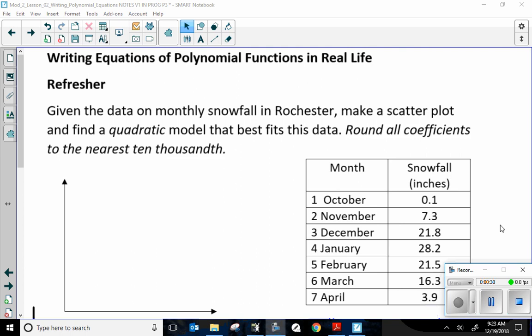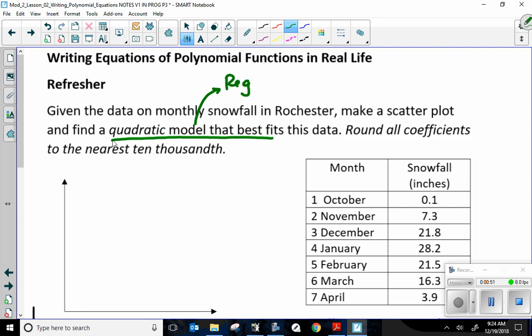Given the data on monthly snowfall in Rochester, make a scatterplot and find a quadratic model that best fits this data. Round all coefficients to the nearest ten thousandth. Oh, that's a little excessive. So, whenever I see a quadratic model of best fit, that tells me I need a regression. Specifically, a quadratic regression, because they tell me quadratic right there.